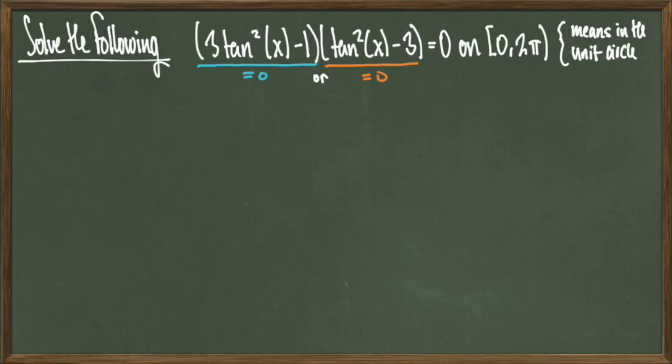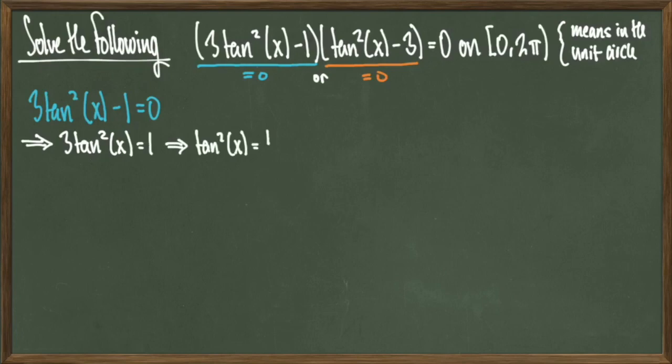What I'm going to do is zoom in on 3 times tan squared of x minus 1, set it equal to 0, and try to find solutions of x for this smaller equation. I'll start solving for tan squared of x, then take the square root of both sides to get that tan of x comes out to be plus or minus 1 over the square root of 3. The goal now is to figure out which angles we can input to get plus or minus 1 over the square root of 3.